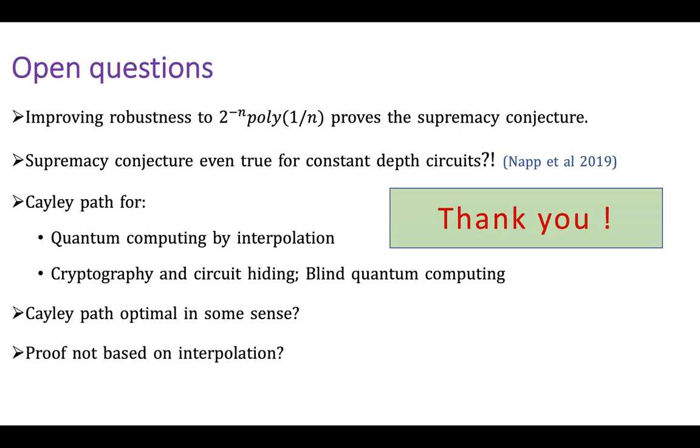There's some open questions, for example, can we actually prove the quantum supremacy conjecture? Is the quantum supremacy conjecture even true for constant depth circuits? I have some doubts based on some of my previous work and the work I'm citing here, and also I believe this Cayley path may be useful for other tasks such as quantum computing by interpolation or maybe cryptography. And can we prove that, for example, Cayley path is optimal in a certain sense? Or other proofs that do not use the Cayley path.